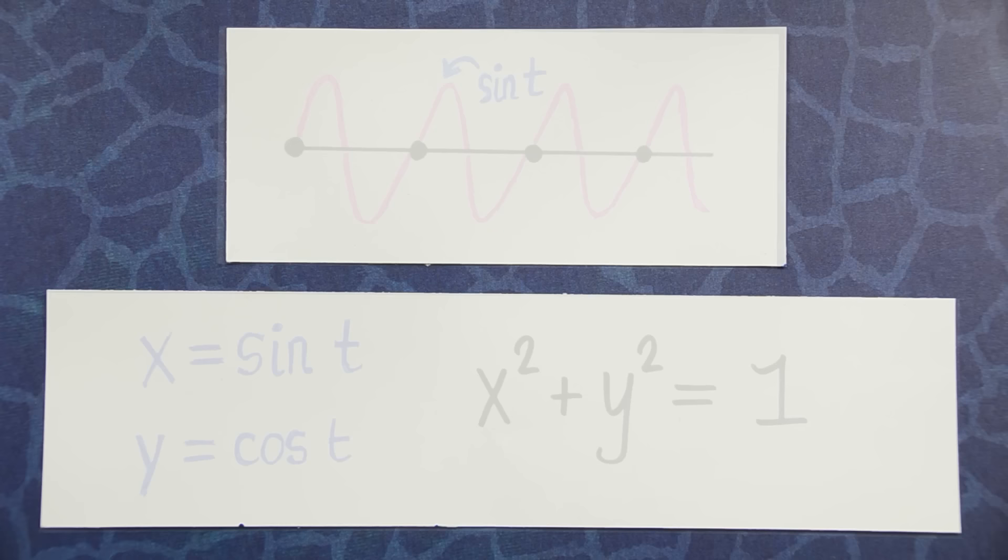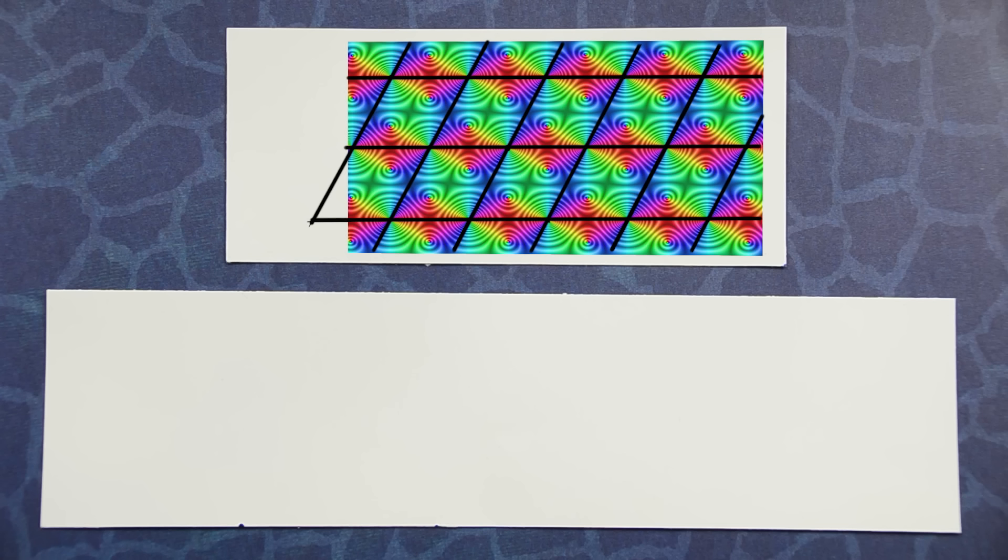What we'll do now is an analogous process in higher dimensions. Given this lattice, we'll look at a higher dimensional analog of sine, which repeats in every square of the lattice.